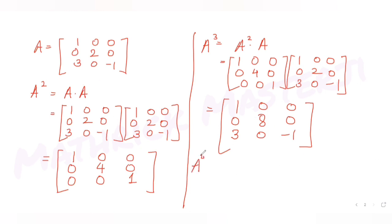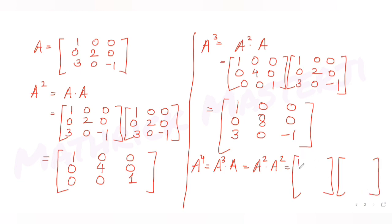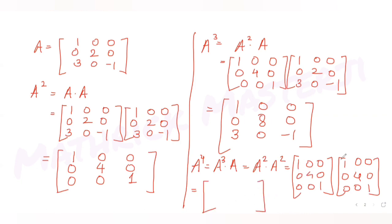Now let's find A to the power 4, which I can write as A squared times A squared. Multiplying 1 0 0 / 0 4 0 / 0 0 1 by itself: first row gives 1, 0, 0. Second row: 0 into 4 gives 0; 4 into 4 gives 16; remaining 0. Third row: 0, 0, 1. So A to the 4th is 1 0 0 / 0 16 0 / 0 0 1.